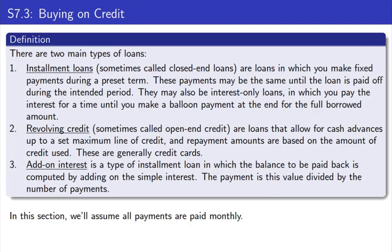In this lesson we'll talk about the ways that you can buy on credit. There are two main types of loans we can encounter in today's world. First, you've got an installment loan. Installment loans are the idea that you pick a certain amount of money that you want to borrow and you pay back a fixed number of payments at a fixed payment amount.